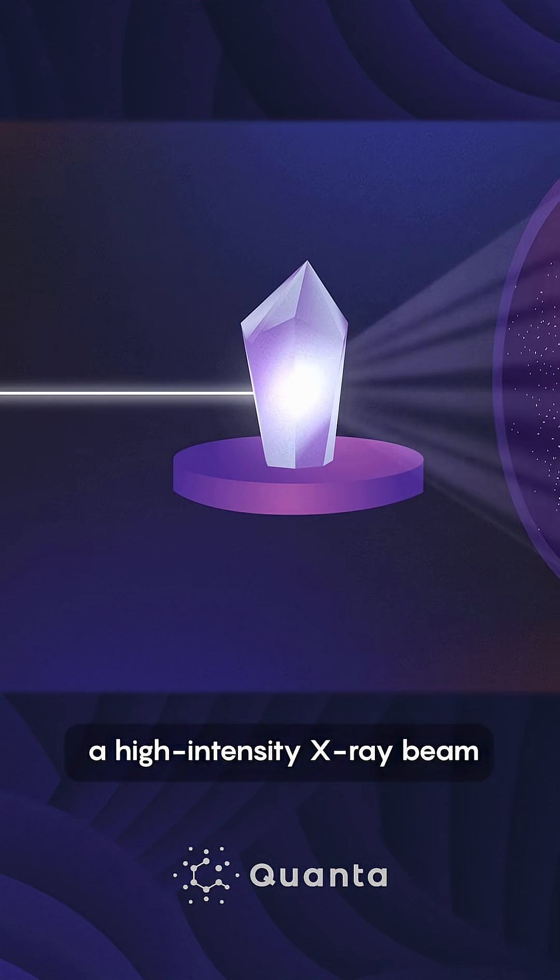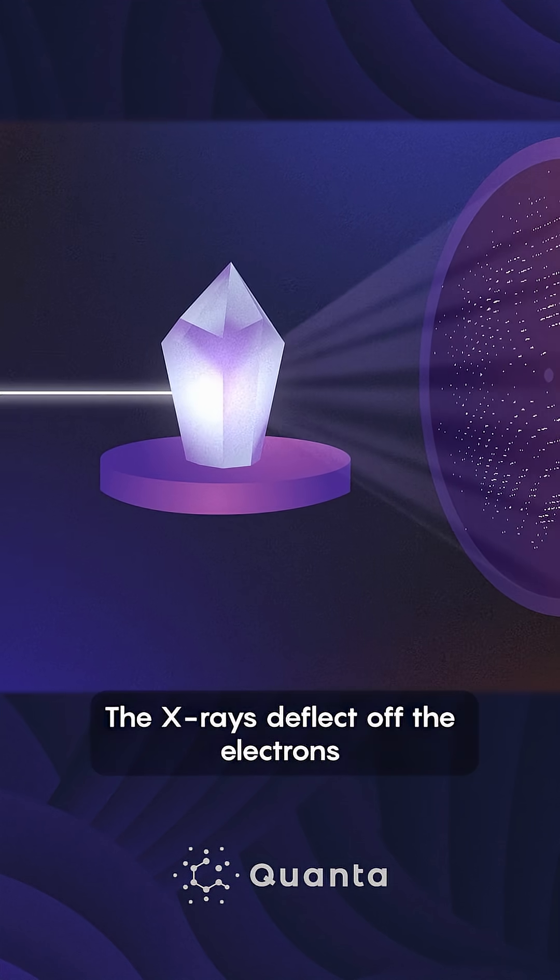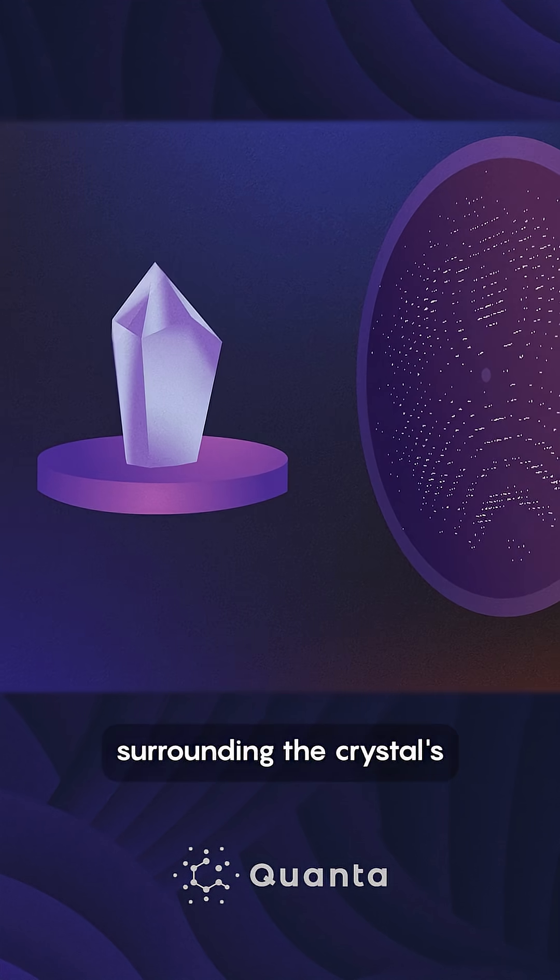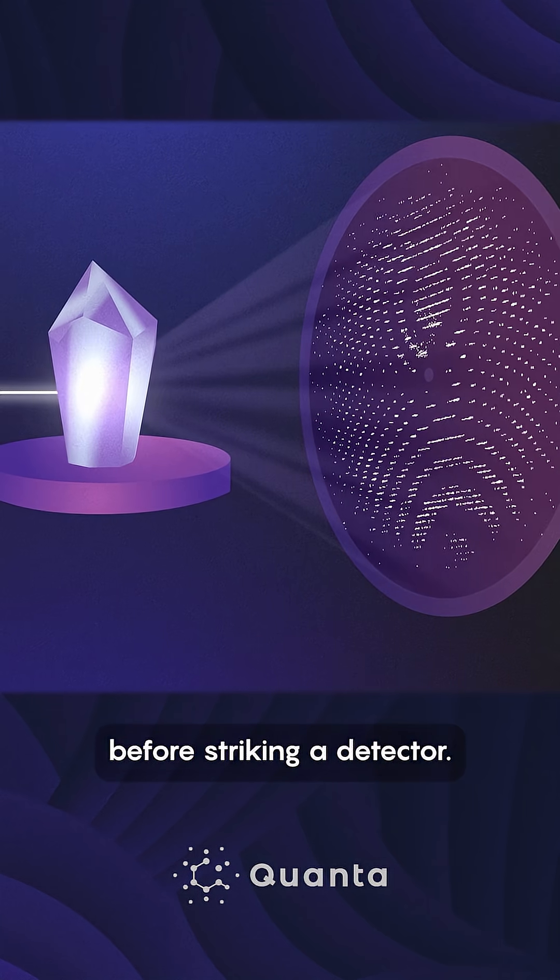The crystal is then placed into the path of a high-intensity X-ray beam and rotated. The X-rays deflect off the electrons surrounding the crystal's atoms, scattering before striking a detector.